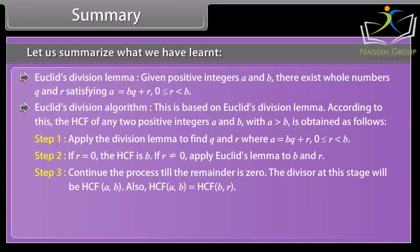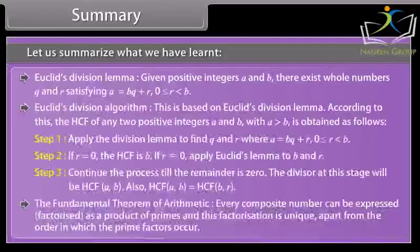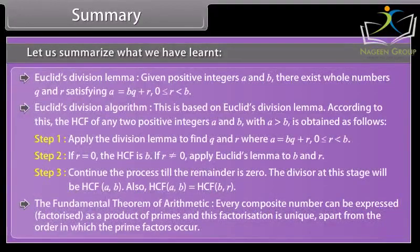The fundamental theorem of arithmetic: Every composite number can be expressed, factorized as a product of primes, and this factorization is unique, apart from the order in which the prime factors occur.